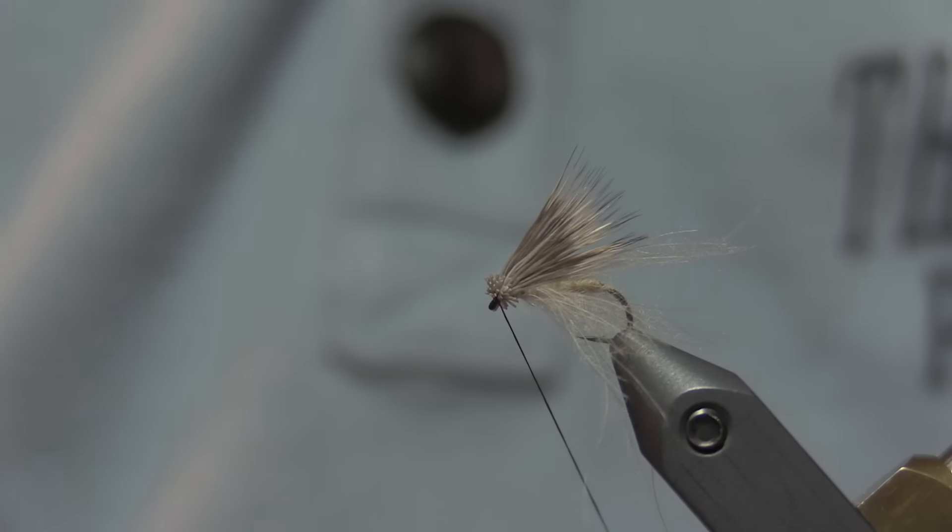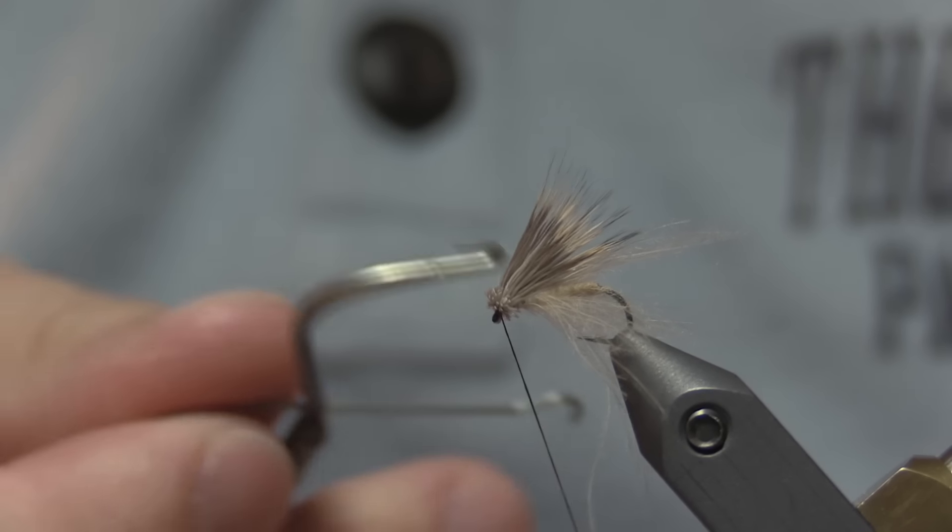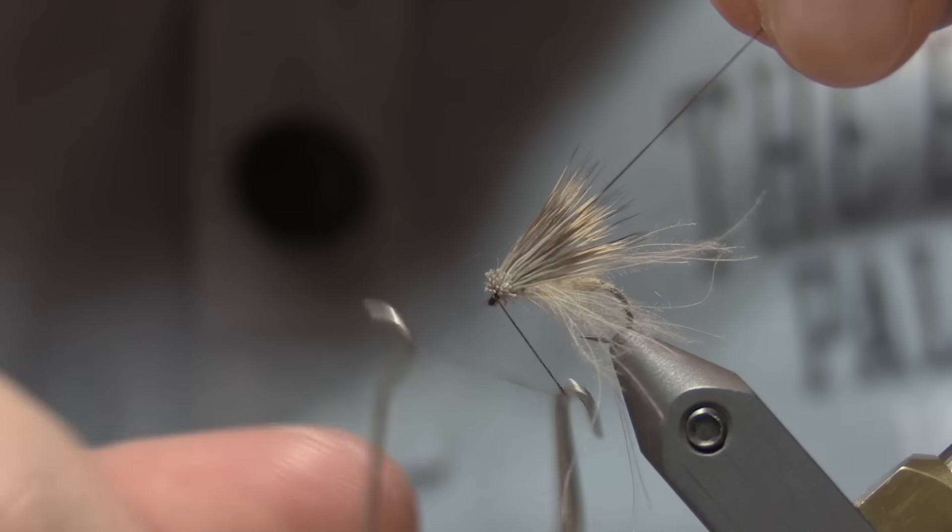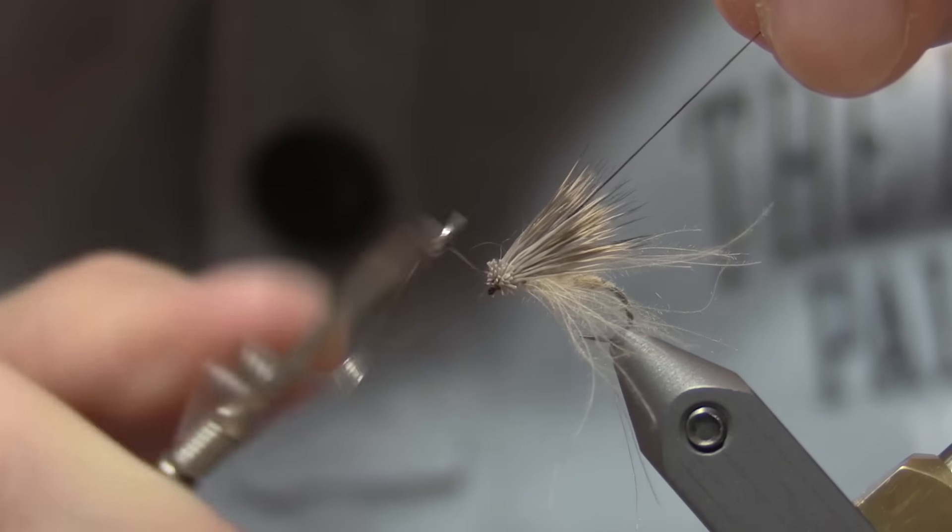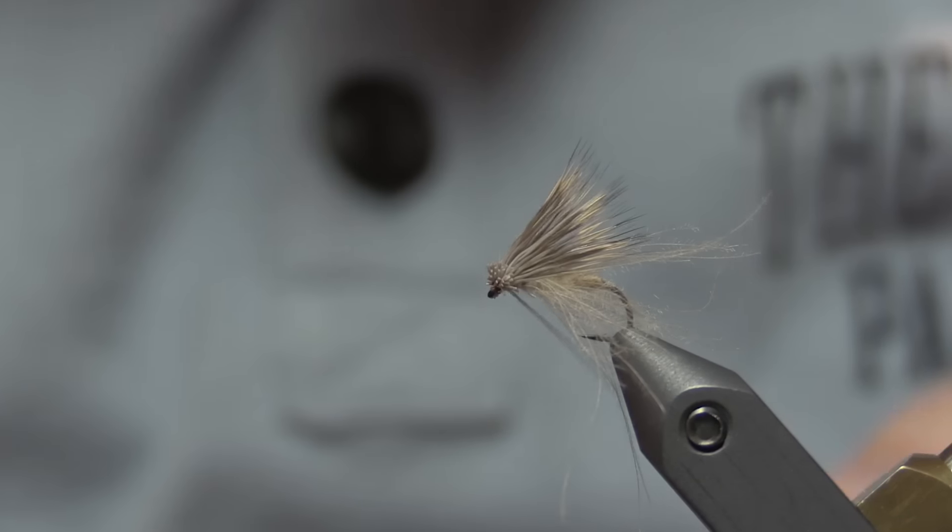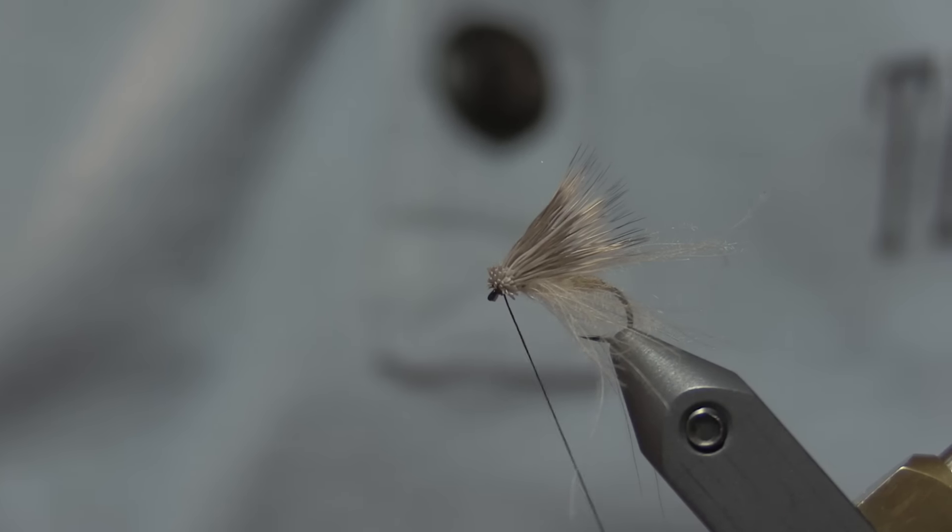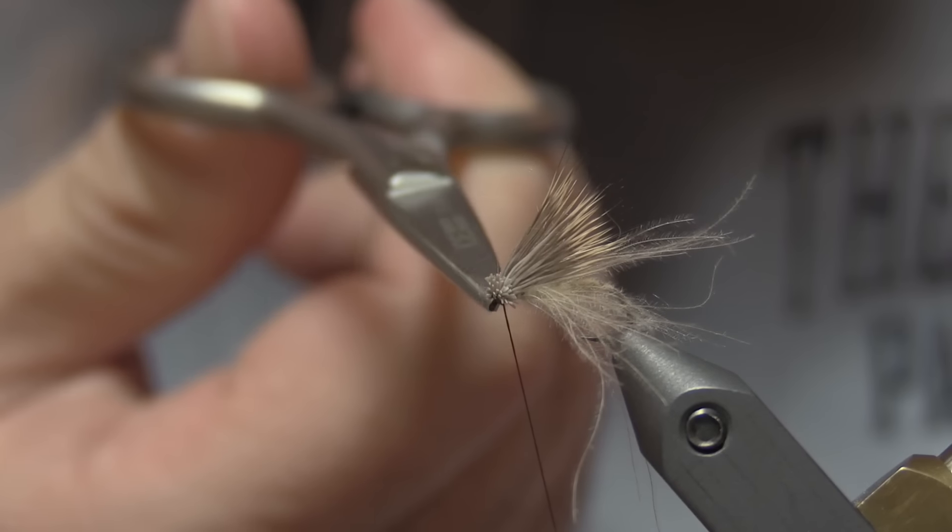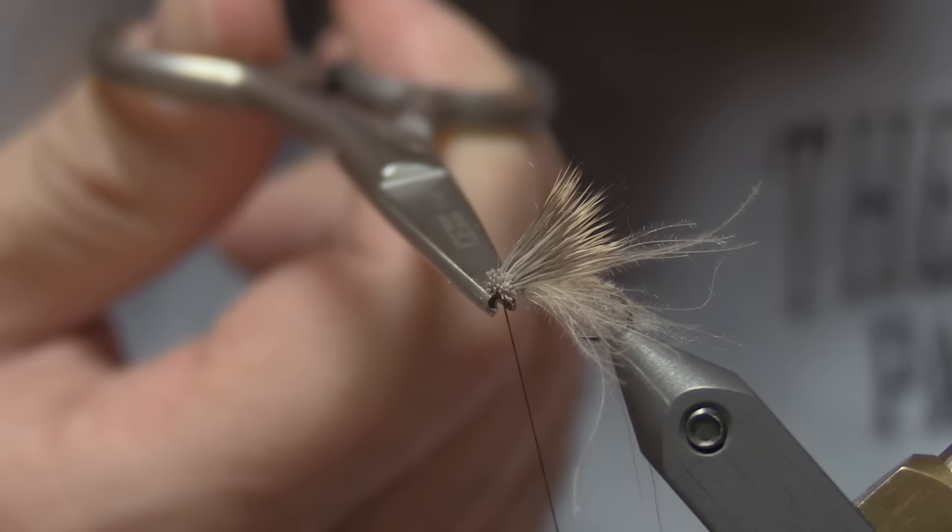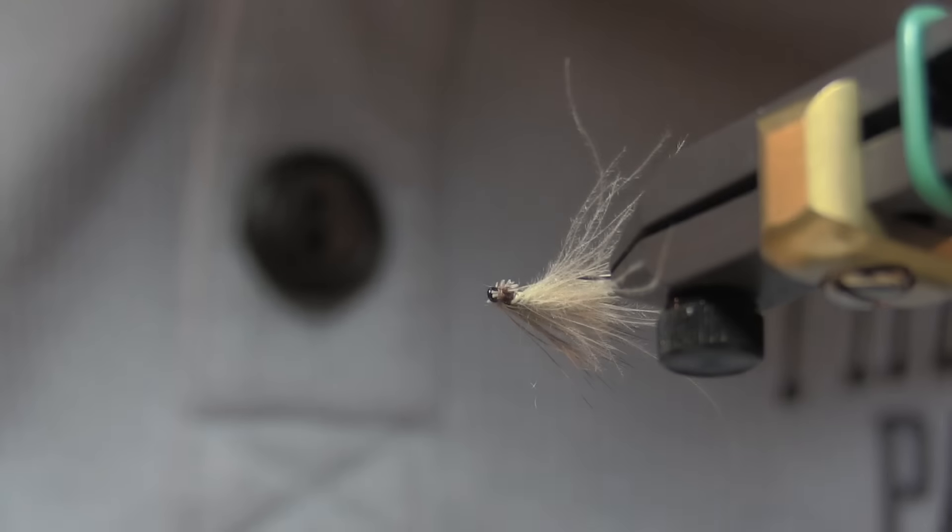And now I'm going to take my whip finisher, or you can hand whip finish if you'd like. Get it right underneath to the return whip. Always make sure you set that knot. A little tension. And that's it.